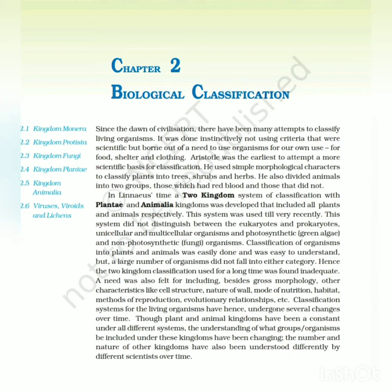Aristotle was the earliest to attempt a more scientific basis for classification. He used simple morphological characters to classify plants into trees, shrubs and herbs. He also divided animals into two groups: those which had red blood and those that did not.